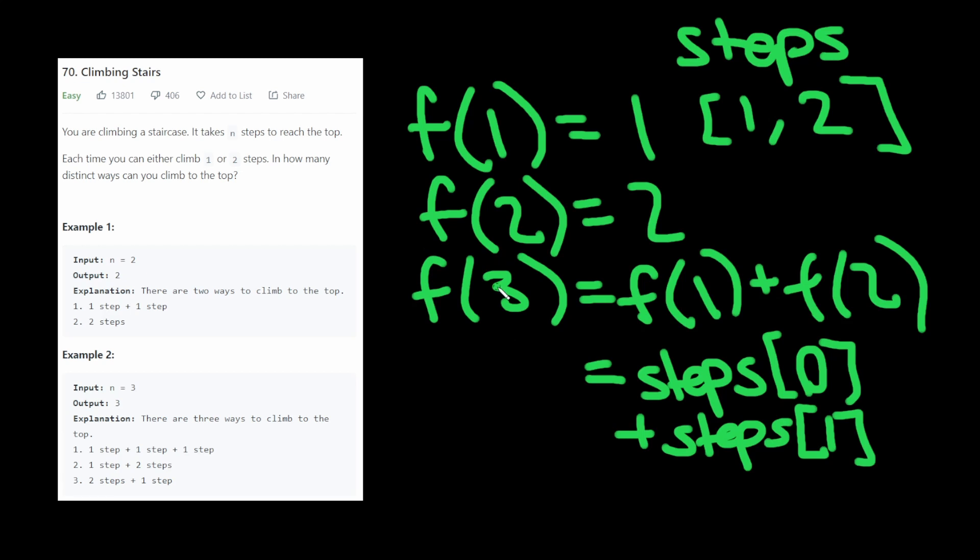And what we can do is we can keep going forward and forward and forward. So we do F of four, F of five, F of six, etc. And keep adding to this array and using the previous value that we saw. And this way, we avoid having to do any recalculation.